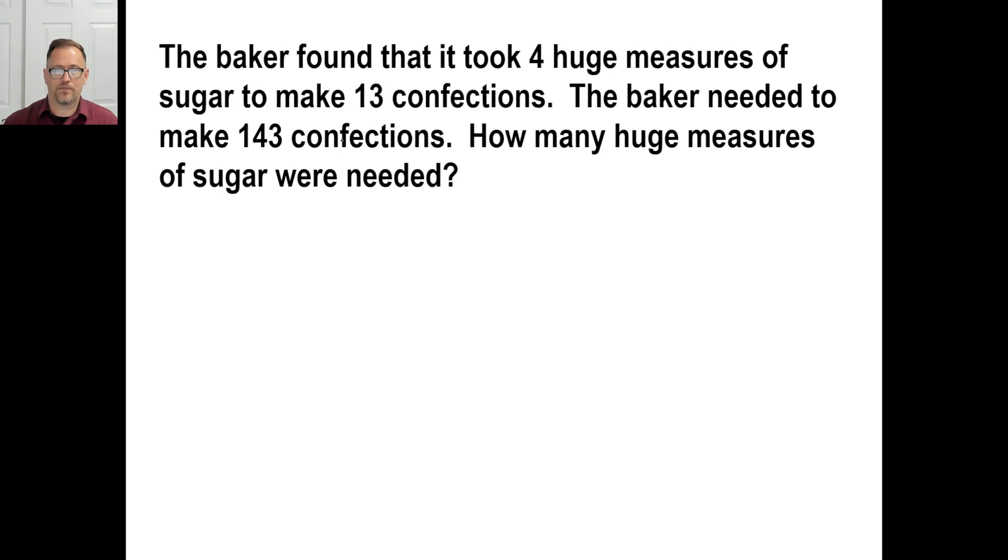Okay. The baker found it took 4 huge measures of sugar. Nothing like a perfect measurement there. 4 measures goes with 13 confections. He needs to make 143 confections. Well, the confections are on the bottom. How many huge measures? Well, 4 goes with 13. X goes with 143. You could probably look at this and go, well, 13 times what gives you 143? 11. So, 4 times 11 is going to be, X is 44. But, if you did the cross multiplication and went 13 times X equals 572, then you do the division. You get the same thing.